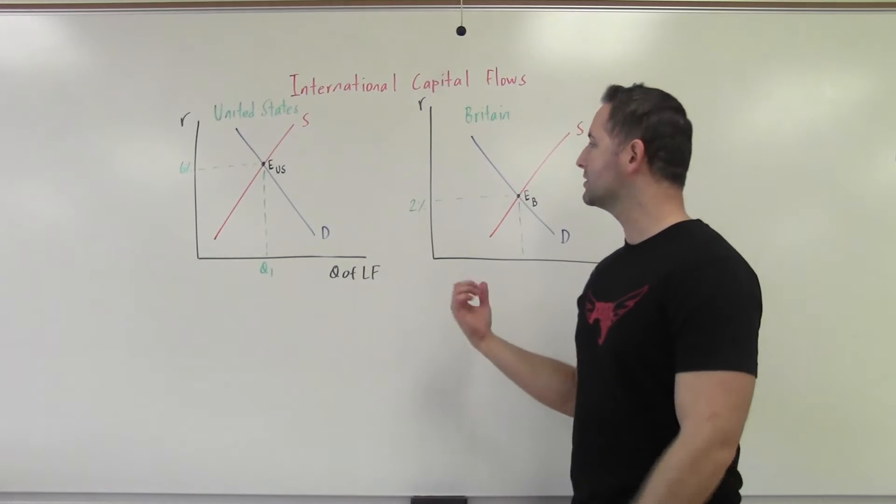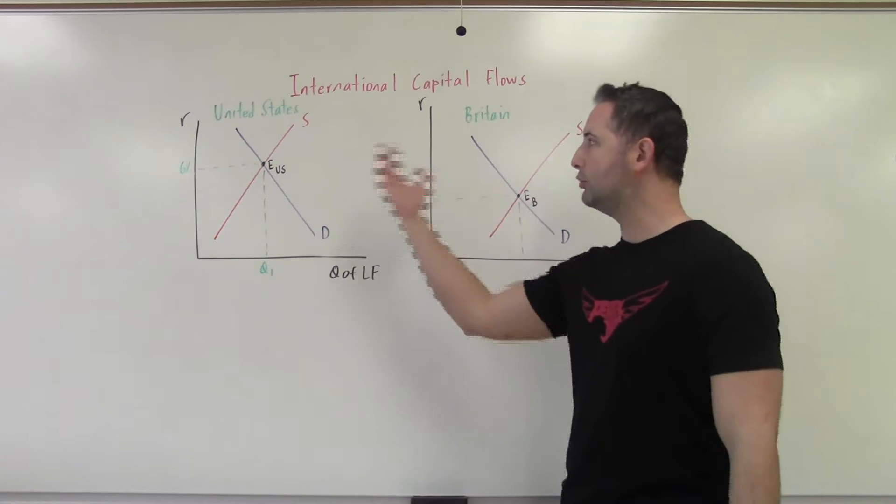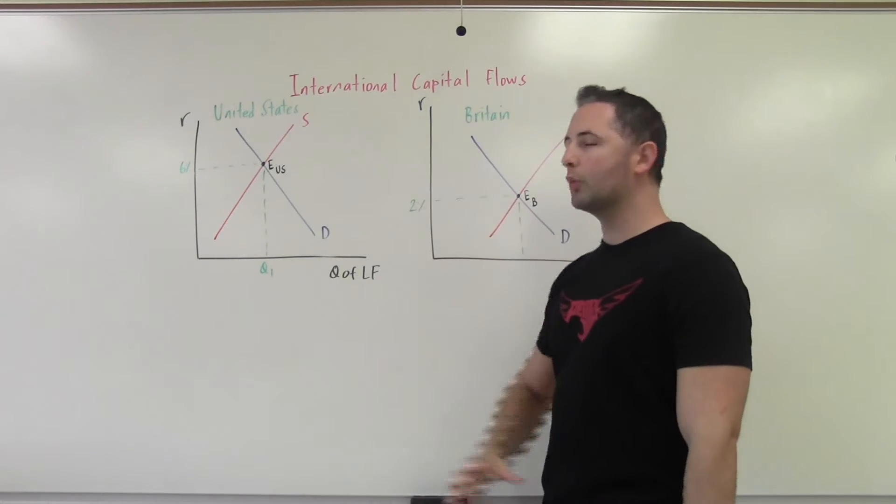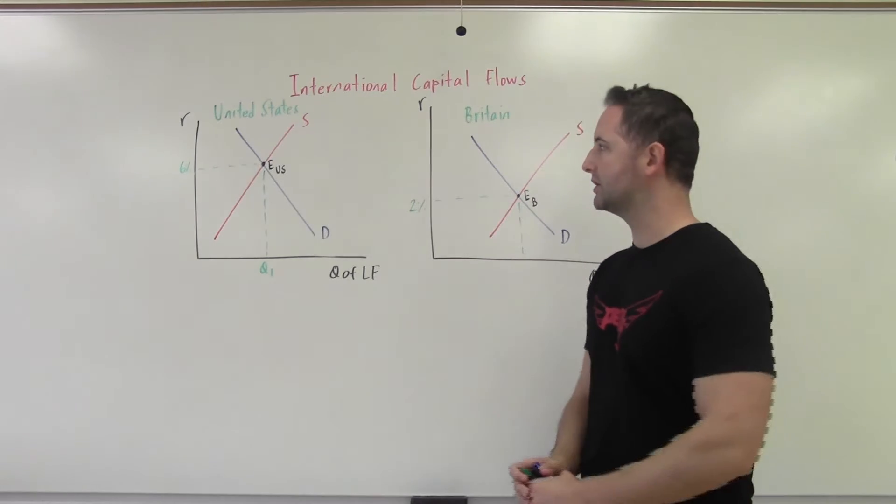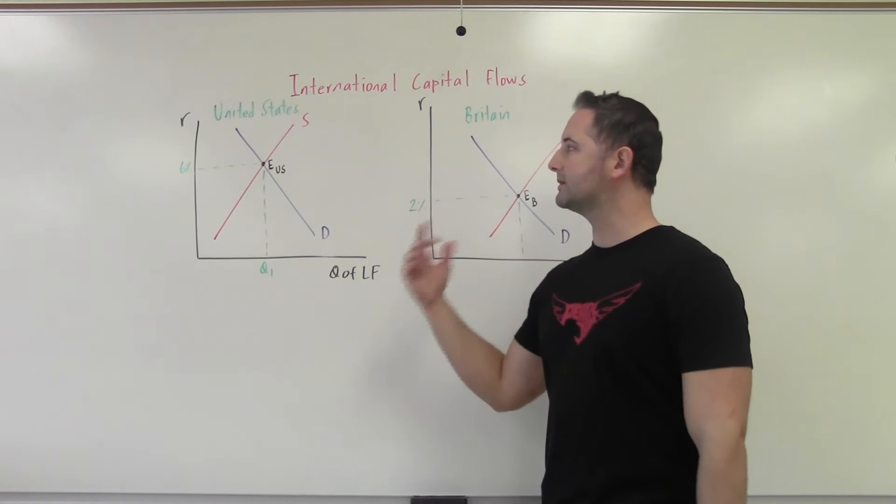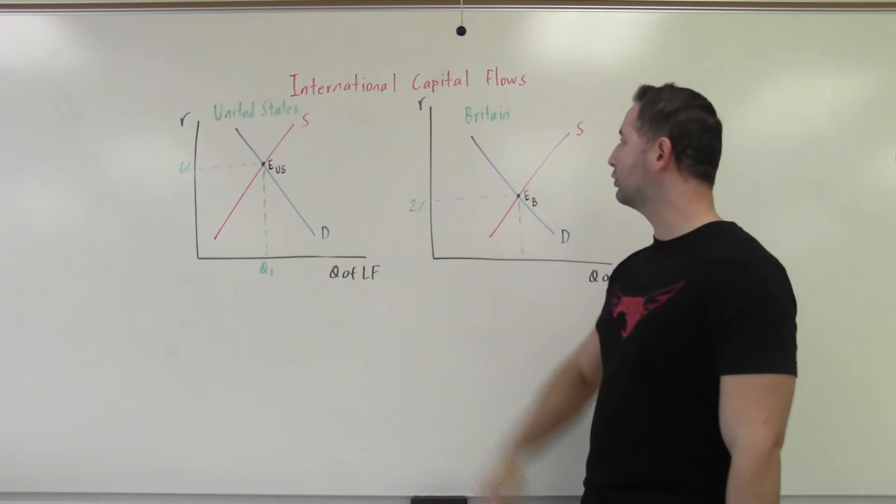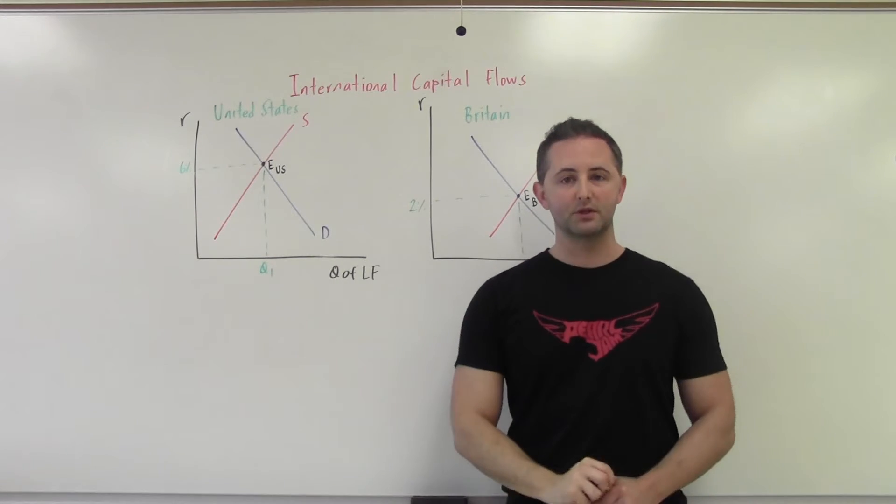And buyers, people borrowing money, they're equally comfortable borrowing from Americans or from British investors. We're going to see money flow in one direction. So the question is, which way is money going to flow? Is it going to flow towards the United States with its 6% interest rate, or is it going to flow towards Britain with its 2% interest rate?